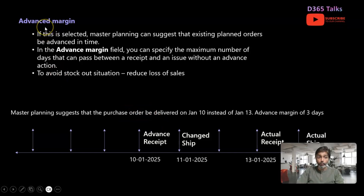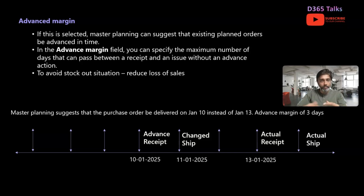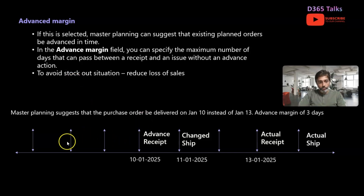The first concept is the Advance Margin — if this is selected, master planning can suggest that existing planned orders be advanced in time. So if you want planned orders to be advanced because the customer is requesting an earlier delivery, or you find challenges in transportation with a higher lead time, you need to configure the coverage group with Advanced Margin. In the Advanced Margin field you specify the maximum number of days that can pass between your receipt and an issue transaction. The example here: the actual ship date is January 14th, and master planning generated an actual receipt date of January 13th.